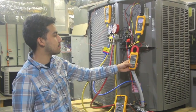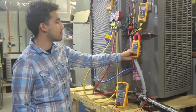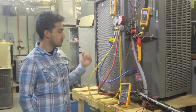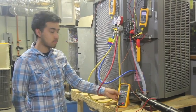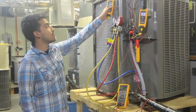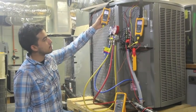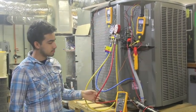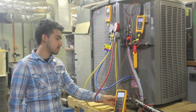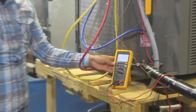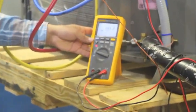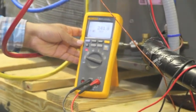We're measuring amps to the compressor, and we have an ambient meter measuring outside air temperature, and a multimeter measuring voltage at the condensing unit.